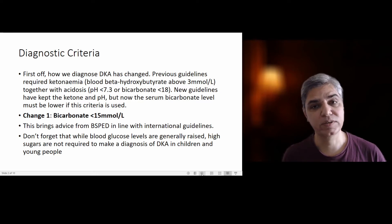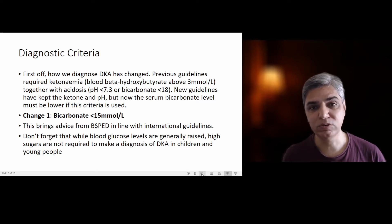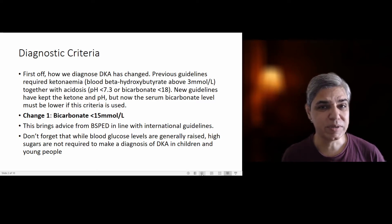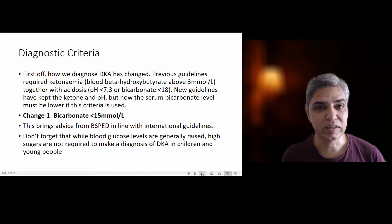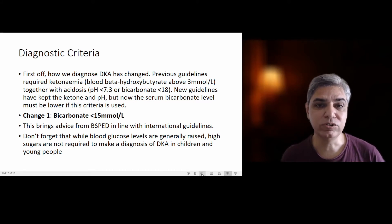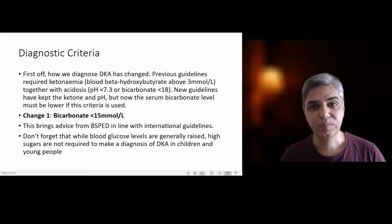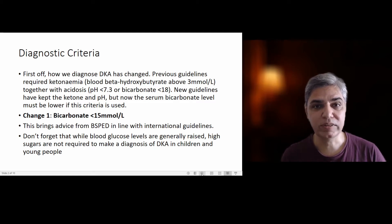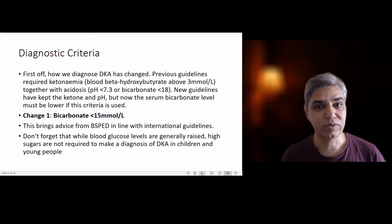Keep in mind that most of the time the blood sugar would be high — more than 11 millimoles per liter. But in paediatrics, even in diabetic ketoacidosis, you may see a normal blood glucose level. So even if blood glucose is normal in a known diabetic child, if the pH is less than 7.3 or bicarbonate is less than 15 millimoles, and there is ketonemia with ketones more than 3 millimoles per liter, that confirms the diagnosis of diabetic ketoacidosis.